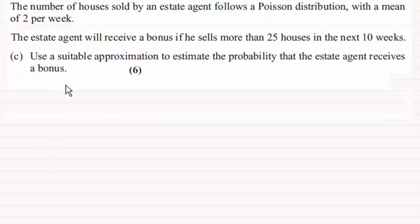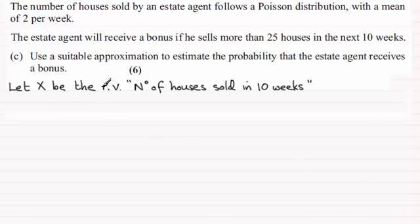Let's first define a random variable for the number of houses that the estate agent sells in a period of 10 weeks. It's got to be a Poisson distribution, and if it's 2 per week then over a period of 10 weeks it's going to be 20. So let X be the random variable number of houses sold in 10 weeks, where X is distributed as a Poisson distribution with a mean of 20.